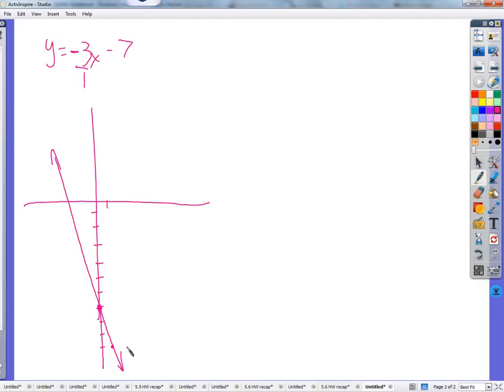And just a reminder that this would be the same as if we thought of it as 3 over negative 1, because then we can go up 3 and to the left one. Up 3 and to the left one. We get that point right there and still makes the slope the same angle of the line.